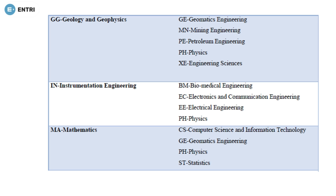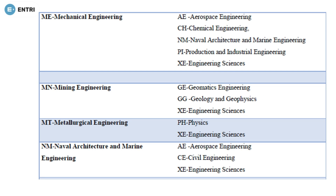If you are from Instrumentation Engineering, you can choose secondary papers: Biomedical Engineering, Electronics and Communication Engineering, Electrical Engineering, and Physics. If you are from a Mathematics background, you can choose it as a primary paper, and the secondary papers will be Computer Science and Information Technology, Geomatic Engineering, Physics, and Statistics. If you are from a Mechanical Engineering background, your secondary choices will be Aerospace Engineering, Chemical Engineering, Naval Architecture and Marine Engineering, Production and Industrial Engineering, and Engineering Sciences.